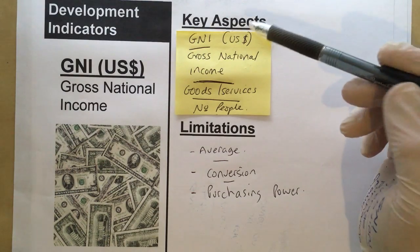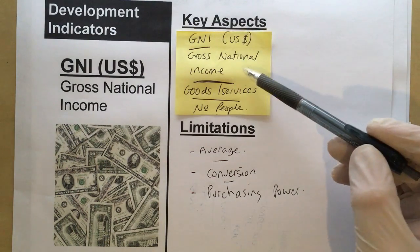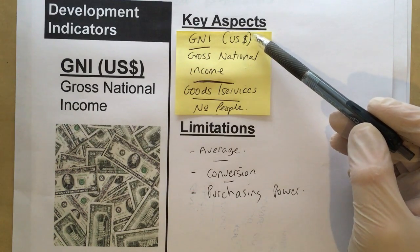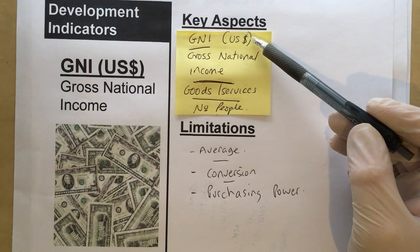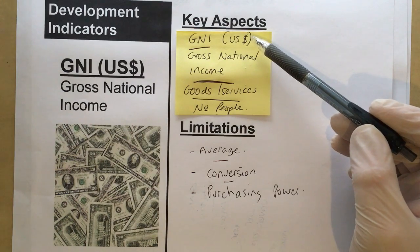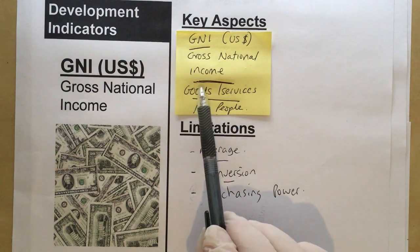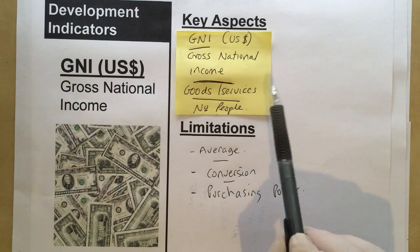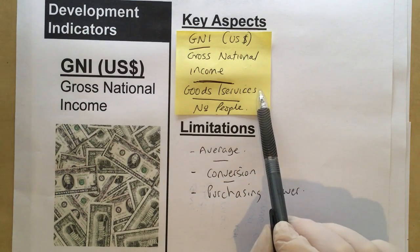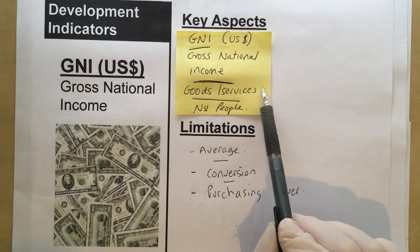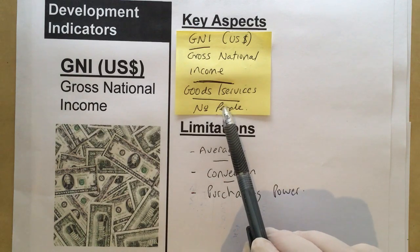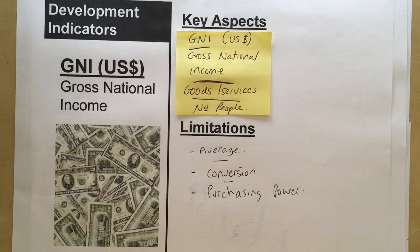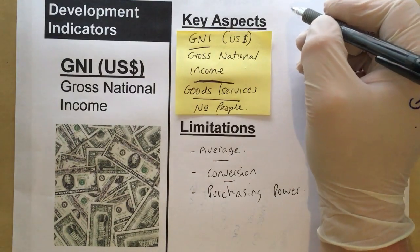GNI stands for Gross National Income and it's measured in US dollars. Whatever the currency in a given country, it's converted into US dollars so it's easily comparable. It's a measure of the goods and services produced in that country that make money, plus any interests in companies abroad, divided by the number of people — giving a GNI per person, sometimes called per capita. Let's take a simple worked example.